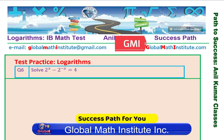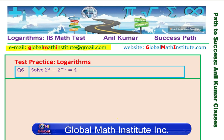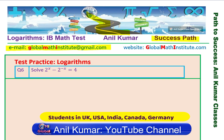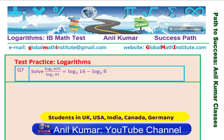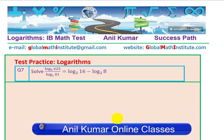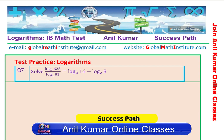In case you want to learn from me, feel free to send an email on the address given. Our students are doing extremely well and we can be part of your success story. Question number 7: solve log to the base 5 of 625 over log to the base x of 81, equals log to the base 2 of 16 minus log to the base 2 of 8.